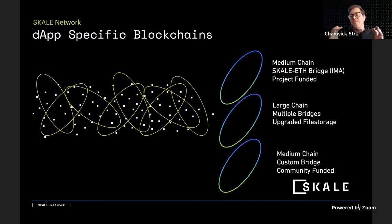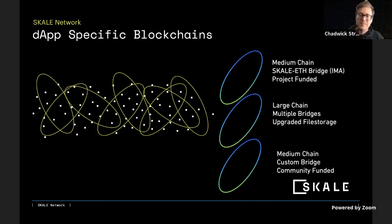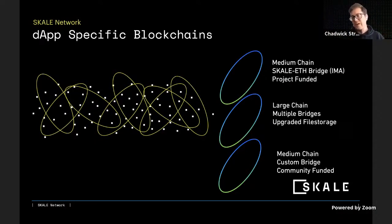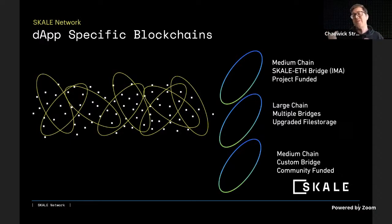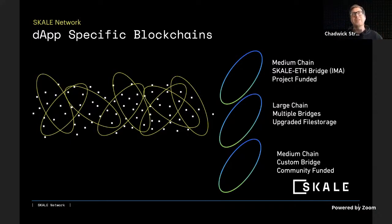This SCALE chain can be set up so that the project or dApp running on it can continue to fund, operate, and modify that medium chain. Separately, another project might request a large SCALE chain — the highest amount of CPU, memory, and storage layer resources that a node can be provisioned for.